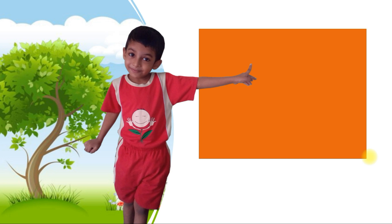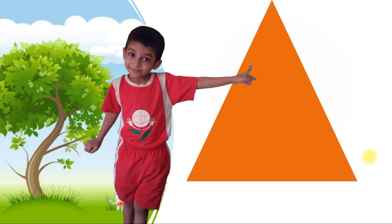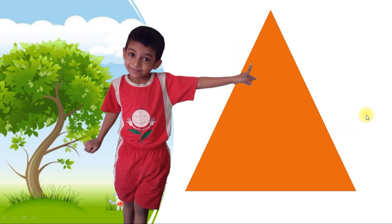Scale. Good. Which shape is this? Circle. Good, very good. Which shape is this? Tangle. Very good.